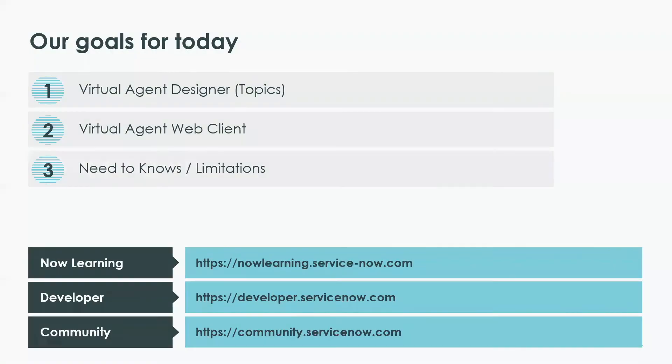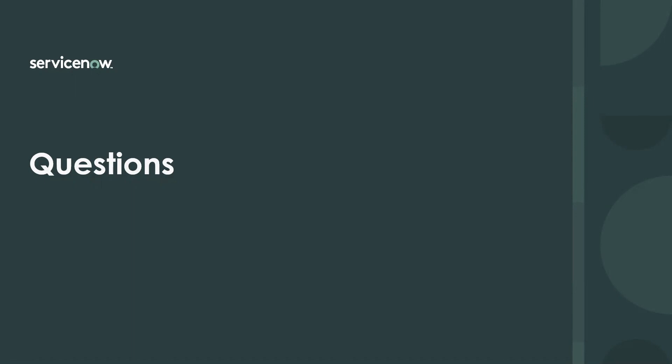Wrapping up, we had a look at localization for the Virtual Agent Designer and Virtual Agent Web Client, and lastly I've touched on some need-to-knows and limitations concerning localization. A good thing to also mention again: when working on localization, do use the i18n debugging, because it really points you in the direction of what can be translated, what cannot, and where you should be — is it UI messages, is it translated text, is it choices? Really make use of that.